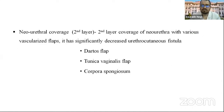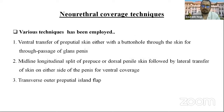The neo-urethral coverage uses a vascularized flap, which decreases the chances of urethrocutaneous fistula. Most commonly used are dartos flap, tunica vaginalis flap, and corpora spongiosum. Coverage techniques include ventral transfer of prepucial skin, either with a buttonhole through the skin and passage of the glans penis; midline longitudinal split of prepucial or dorsal penile skin, followed by lateral transfer of skin to either side; and lastly the transverse outer prepucial island flap.